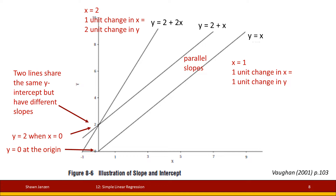Comparing the middle line to the one on the right: both have a slope of 1, so they go up one and over one in each case — these lines are parallel. However, they cross the y-axis at different points. The middle crosses at 2, while the right crosses at 0. We don't see the 0 explicitly in the equation for the right line because it drops out — y equals x — but it could be written as y equals 0 plus x, and it would mean the same thing.